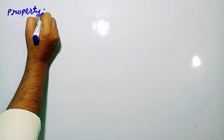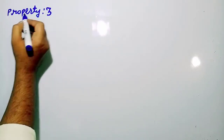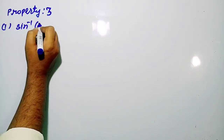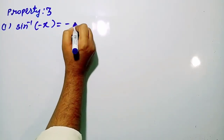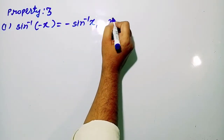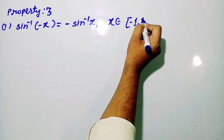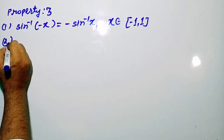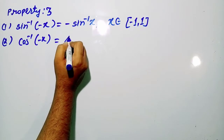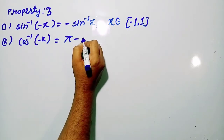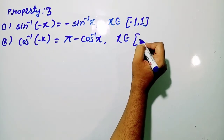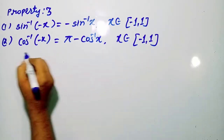Now moving to the third properties of inverse trigonometric functions. The first is: sin⁻¹(−x) = −sin⁻¹ x, where x belongs to [−1, 1]. Second, cos⁻¹(−x) = π − cos⁻¹ x, where x belongs to the closed interval [−1, 1].